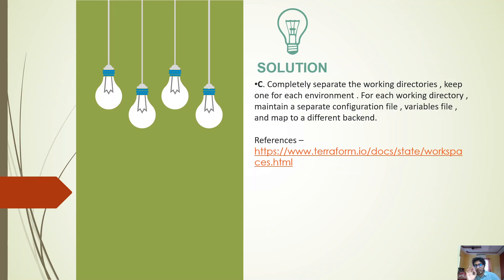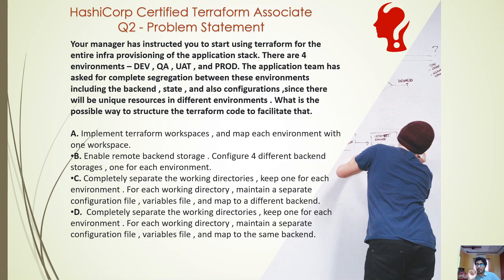Option C — completely separate working directories, one per environment, each with a separate config file, variable file, and a different backend — is correct. One trade-off is that if you make a change, you have to replicate it across all four environments. In some cases, where dev, QA, and prod share the same source repo with only variables changing, separate working directories may not be the ideal approach.